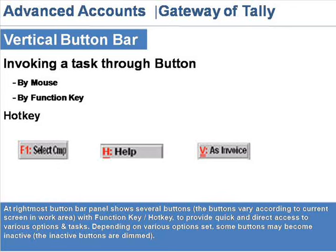The vertical button bar at the rightmost panel shows several buttons. The buttons vary according to the current screen in the work area, with function keys and hotkeys providing quick and direct access to various options and tasks. Depending on various option sets, some buttons may become inactive. The inactive buttons are dimmed.